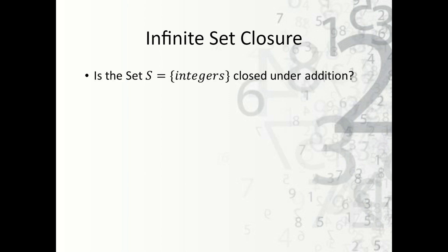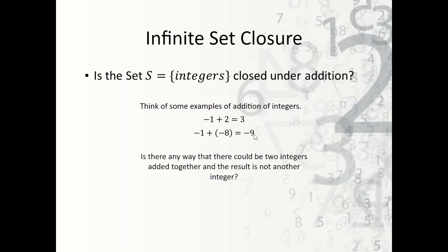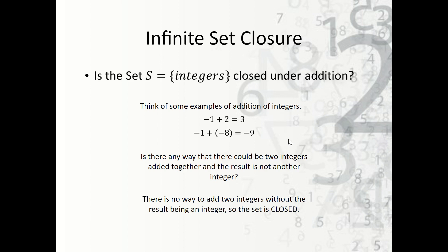Let's take a look at the set S of integers and ask: is it closed under addition? We can't use a table anymore, so we need to think of some examples of addition of integers, then try to broaden it and ask: is there any way that any two integers can be added together and not be an integer? We do some examples and they still turn out to be integers. If I add any two integers — including two negatives — is there any way to get a fraction, a real number, or a complex number? No, there's not. Anytime I add any two whole numbers together, I should get another whole number. Therefore, there is no way to add two integers together without getting another integer, so the set is closed.